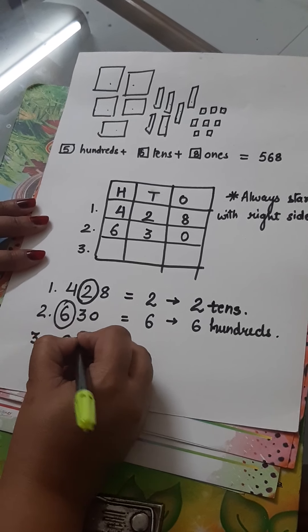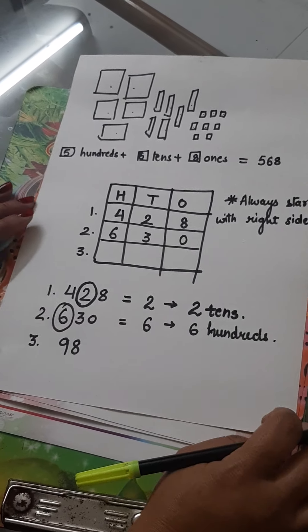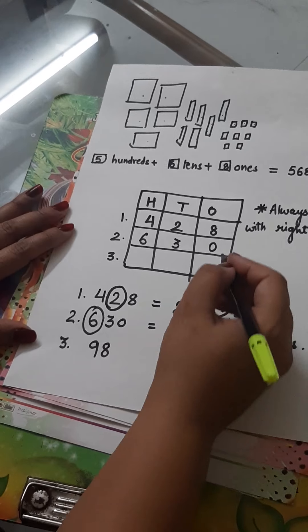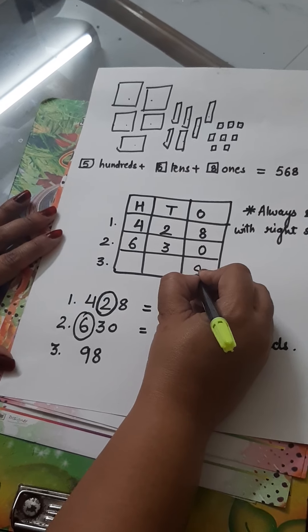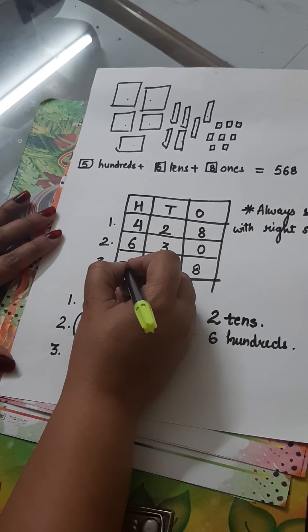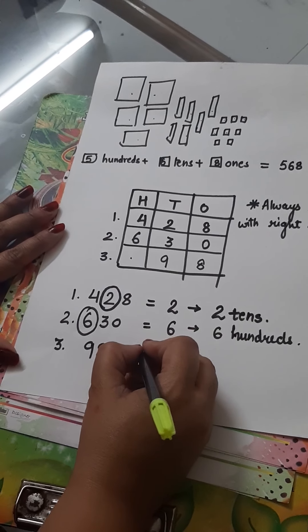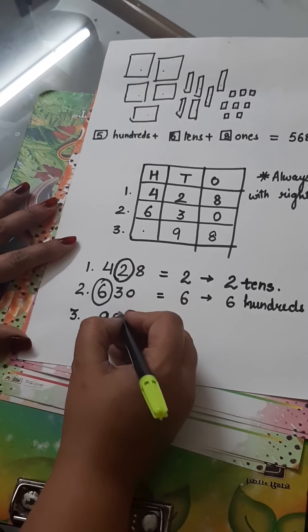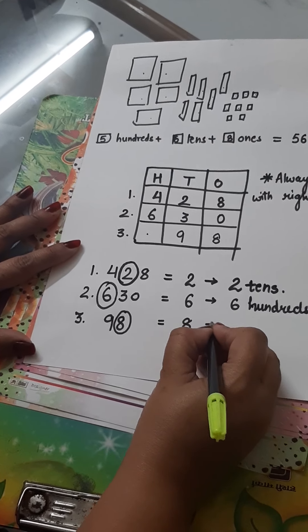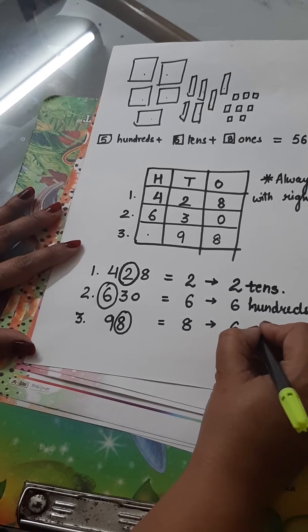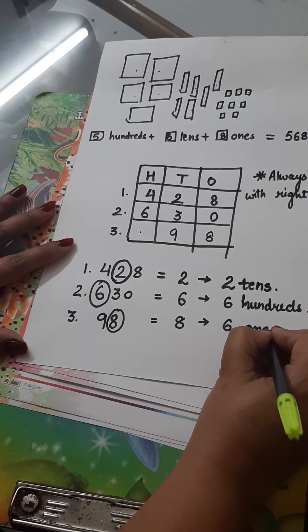The third one is 98. How will you write number 98? Very simple. Always start with the right side. 8, 9. Let it be blank because we don't have any number here. The place value of 8 is 8 ones.